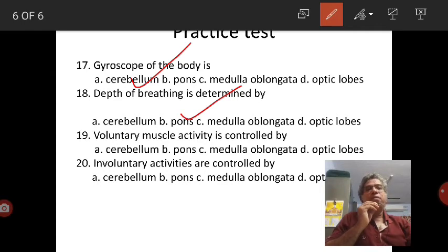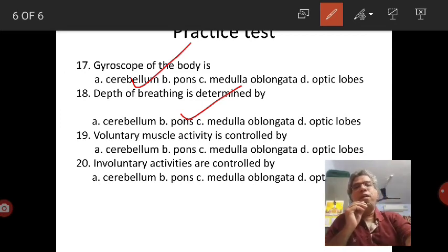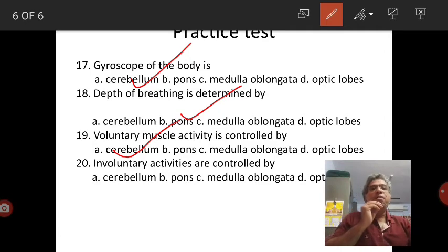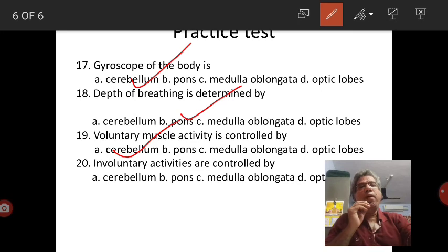Voluntary muscle activity is controlled by cerebellum, which is also called little brain. In a drunkard, the alcohol influences the cerebellum activity, and as a result that person can't maintain his posture after taking alcohol. Involuntary activities are controlled by medulla oblongata.